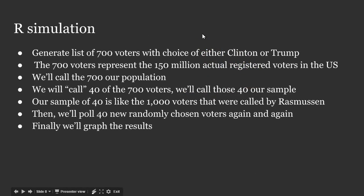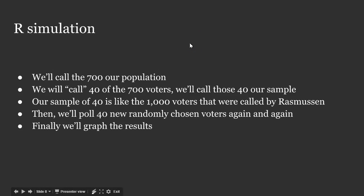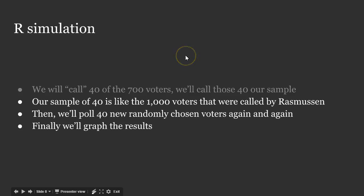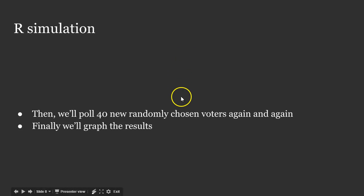The way we're going to conduct a simulation using R is we're going to generate a list of 700 voters who are either interested in Clinton or Trump. The 700 voters represent the 150 million actual registered voters in the U.S. — we'll call this our population. We're then going to pretend as though we call 40 of the 700 voters, and we'll call those 40 our sample, just like the 1,000 voters were in the Rasmussen poll. Then we'll poll 40 new randomly chosen voters again and again. In other words, we're going to produce a sampling distribution, and finally we'll graph the results to see what we get.